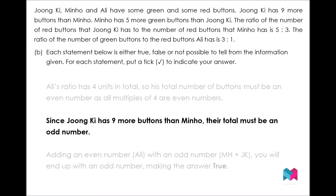Secondly, the total number of buttons that Jungki and Minho have together must be an odd number, as Jungki has 9 more buttons than Minho. We can test this with simple numbers: if Minho has 3 buttons, Jungki has 12, giving a total of 15, which is odd. If Minho has 4 buttons, Jungki has 13, giving a total of 17, which is also odd. As you can see, the total of Jungki and Minho will always be an odd number.